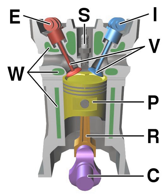In an internal combustion engine, the expansion of the high temperature and high pressure gases produced by combustion applies direct force to some component of the engine. The force is applied typically to pistons, turbine blades, rotor or a nozzle. This force moves the component over a distance, transforming chemical energy into useful mechanical energy.